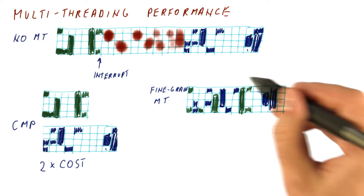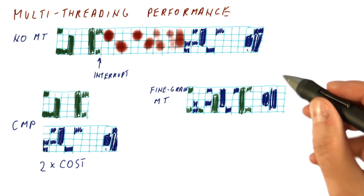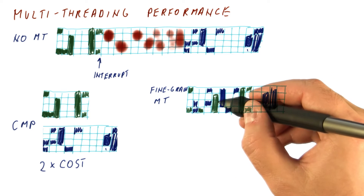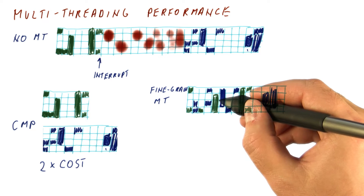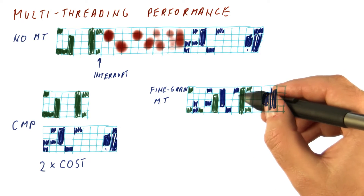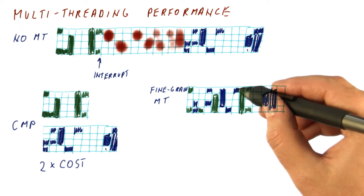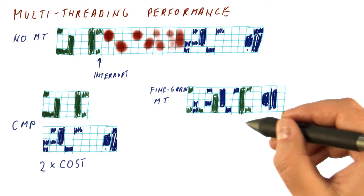Fine-grained multi-threading benefits from the fact that when there is a long period of idleness in one thread — for example due to a cache miss — you can still run instructions from the other thread.